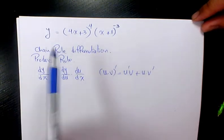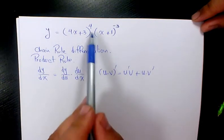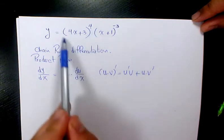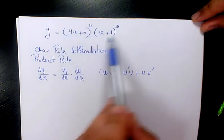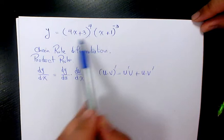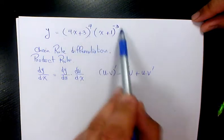So let's see this example. According to the product rule, we need to say the derivative of this part times the second part, plus the first part times the derivative of the second part.